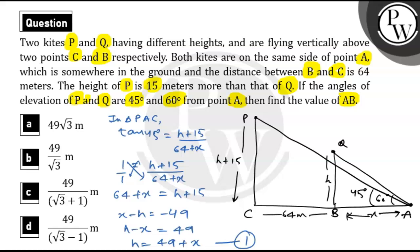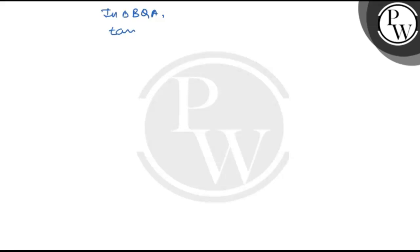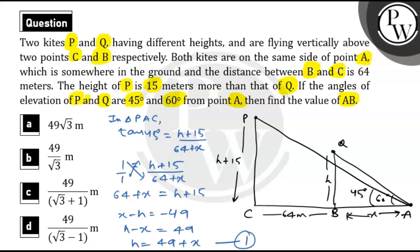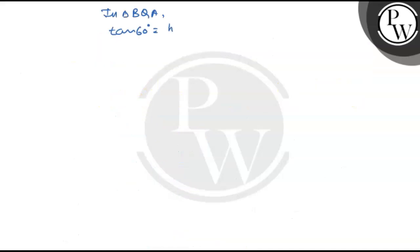Now on the next part, the 60-degree angle appears in triangle BQA. In triangle BQA, we apply tan 60. The perpendicular is H and the base is X. So tan 60 = H / X. Since tan 60 equals root 3, we get: root 3 = H / X. Cross-multiplying: H = root 3 · X. This is Equation 2.